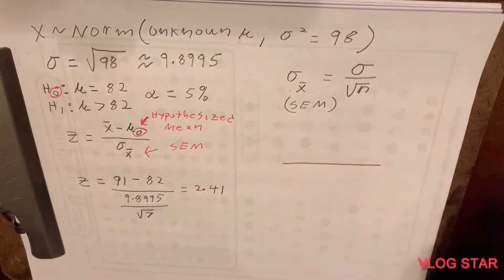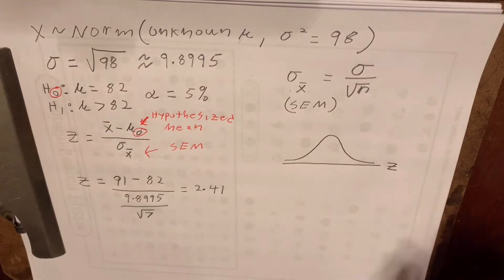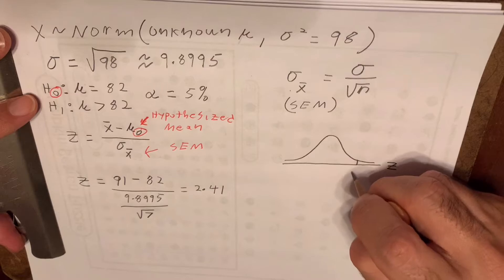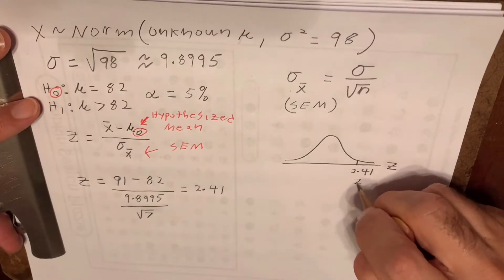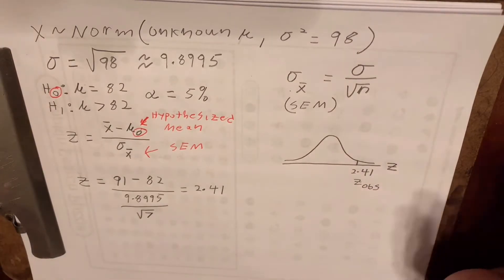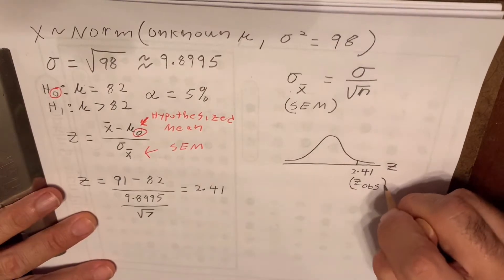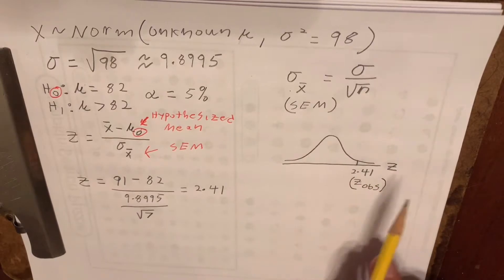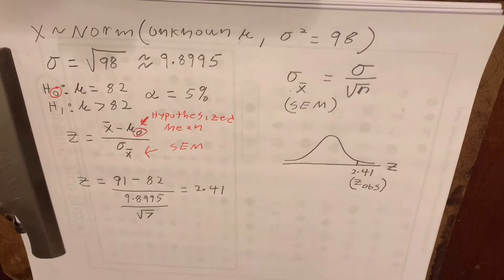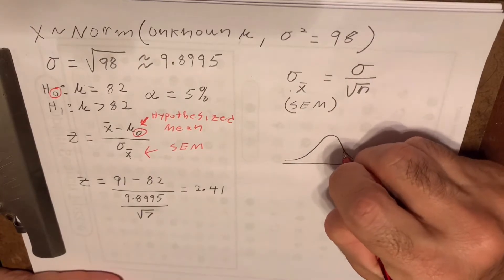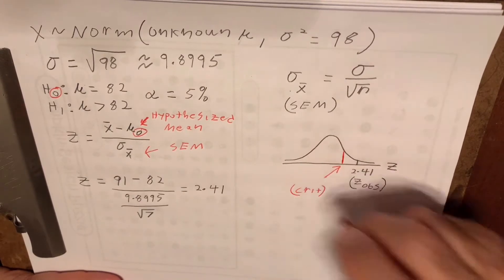Next, we draw a picture of the null distribution, which is a Z-distribution. We place our observed Z-score of 2.41 on the right side — write Z-subscript OBS for 'Z-observed' under it. This shows your instructor, even if you made a math error, that you know it's an observed Z-score, and that you'll be comparing it to a right-tailed critical value.